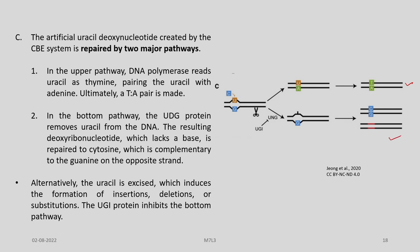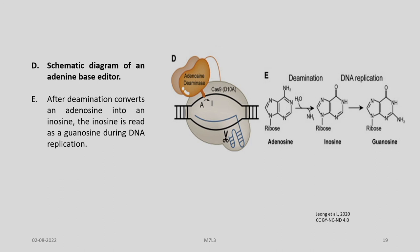In the bottom pathway, the UDG protein removes uracil from the DNA. The resulting abasic site is repaired to cytosine, which is complementary to the guanine on the opposite strand. Alternatively, the uracil is excised, which induces the formation of insertions, deletions, or substitutions. The UGI protein inhibits this bottom pathway. This is a schematic diagram of an adenine base editor, where adenosine undergoes deamination to form inosine, which is finally converted to guanosine. The inosine is read as guanosine during DNA replication, with the adenosine deaminase connected to the Cas9 through a linker loop.